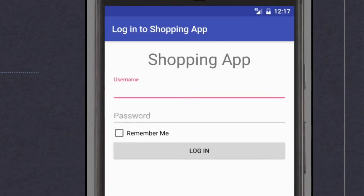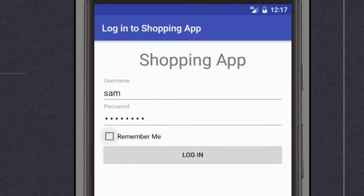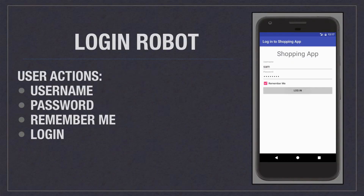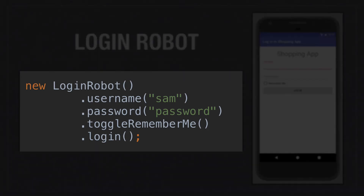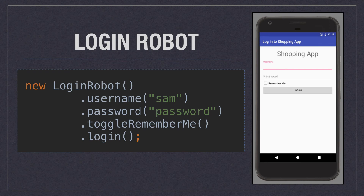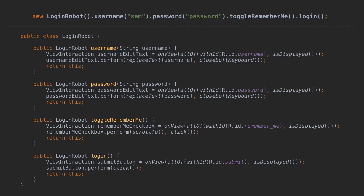Here's the login screen for our application. We've created a list of actions that the user can perform on the screen. Each one of these actions should be encapsulated by one method on the robot. Each robot we create will be responsible for interacting with a specific screen of your application. For each method on the robot, there is an underlying implementation that performs its actions with Espresso.